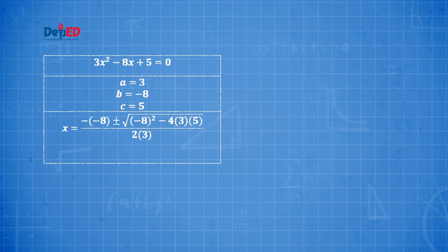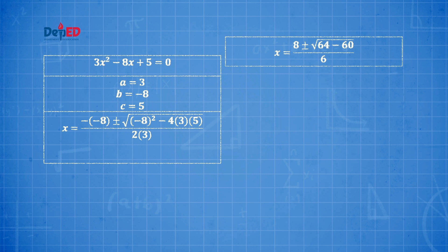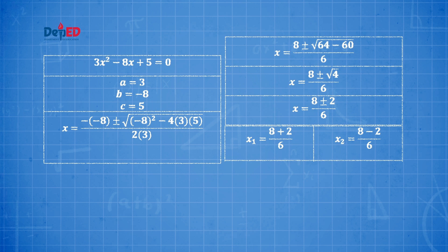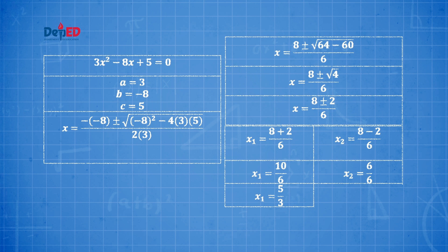x = (8 ± √(64 − 60)) / 6. Since 64 − 60 = 4, the value 4 appears under the radical sign. The principal root of 4 is 2, so the numerator is 8 ± 2. Breaking into two: x₁ = (8 + 2)/6 and x₂ = (8 − 2)/6. Then solving: x₁ = 10/6 = 5/3, and x₂ = 6/6 = 1. The roots are not equal but they are both rational.